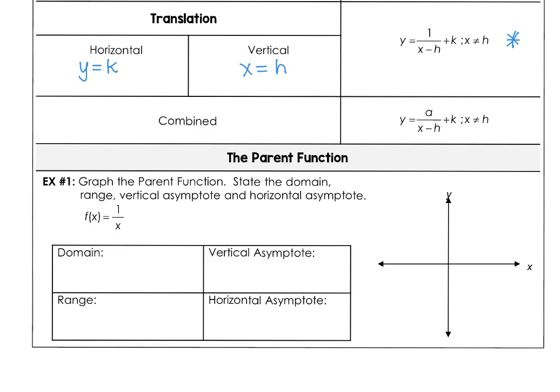x minus h moves right, x plus h moves left. When k is positive, we're moving the graph up, and when k is negative, we're moving the graph down. To graph the parent function in example 1, we know that the vertical asymptote is at x equals 0 and the horizontal asymptote is at y equals 0. The parent function has two branches, one in quadrant 1 and one in quadrant 3.